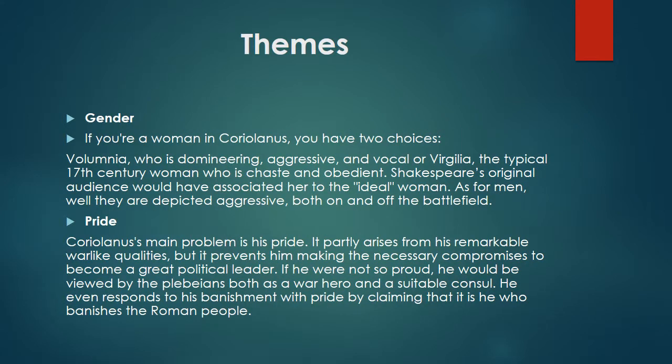Another theme is gender. If you're a woman in Coriolanus, you have two choices: Volumnia, who is domineering, aggressive, and vocal; or Virgilia, the typical 17th-century woman who is chaste and obedient, whom Shakespeare's original audience would have associated with the ideal woman. As for men, they are depicted as aggressive both on and off the battlefield. The final theme is pride. Coriolanus' main problem is his pride — it partly arises from his remarkable warlike qualities, but it prevents him from making necessary compromises to become a great political leader. He even responds to his banishment with pride, claiming that he is the one who is banishing the Roman people.